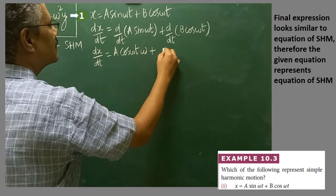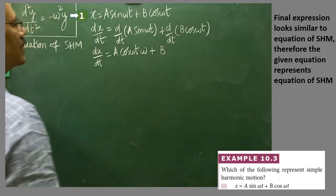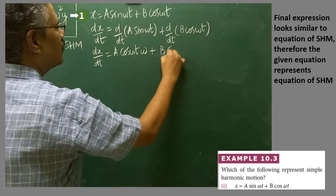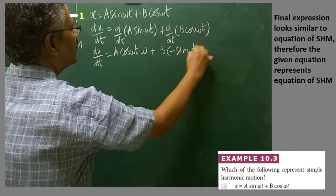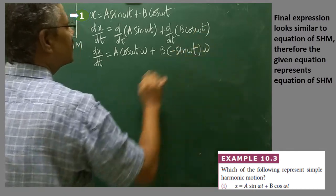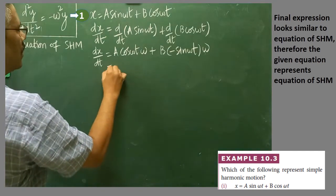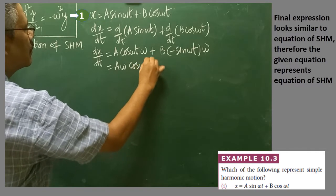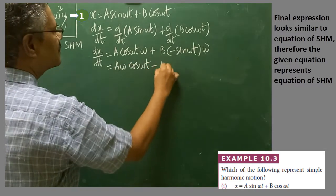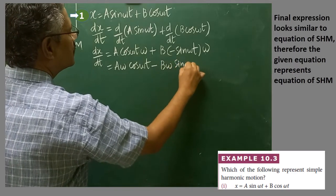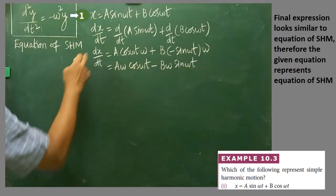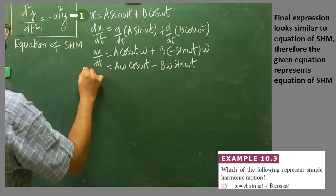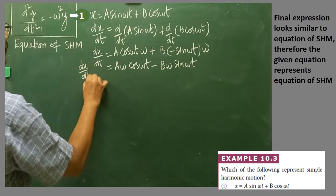b is a constant, so b can be taken outside. If cos(ωt) is differentiated you get −sin(ωt). If ωt is differentiated separately you get ω. So the final expression for dx/dt is: aω cos(ωt) − bω sin(ωt).